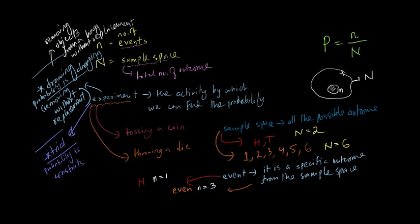When you think about probability, you have to ask yourself: what is the activity we need to perform? That activity is called the experiment. Then, what are the possible outcomes of that activity? That is known as the sample space. For example, if the experiment is tossing a coin, the sample space is heads or tails, so the value of N — the number of items in the sample space — is two. If you throw a die, the sample space is one, two, three, four, five, or six, so uppercase N equals six.